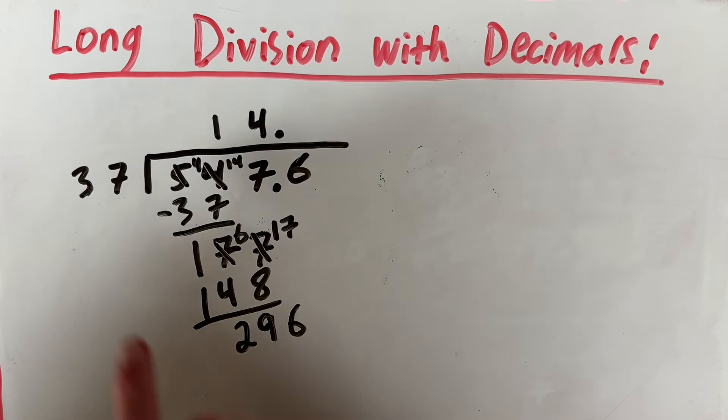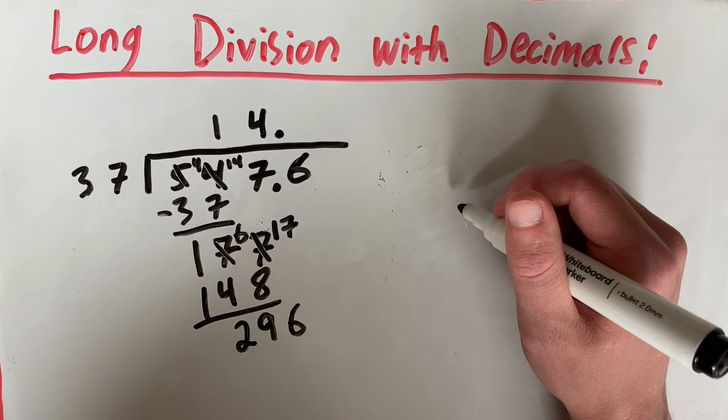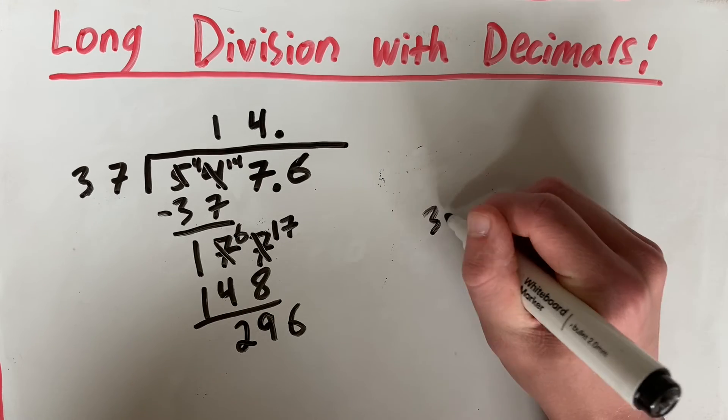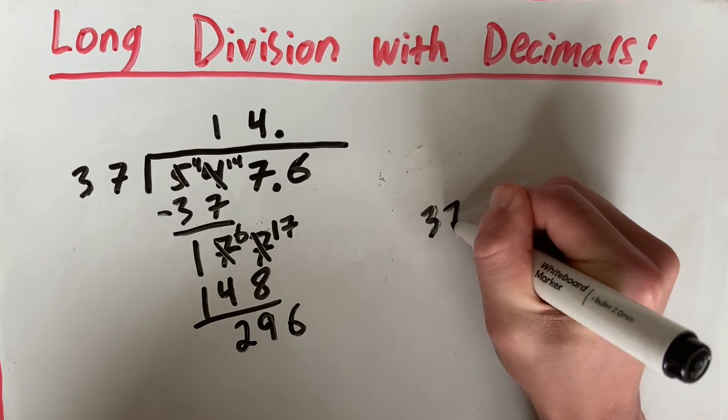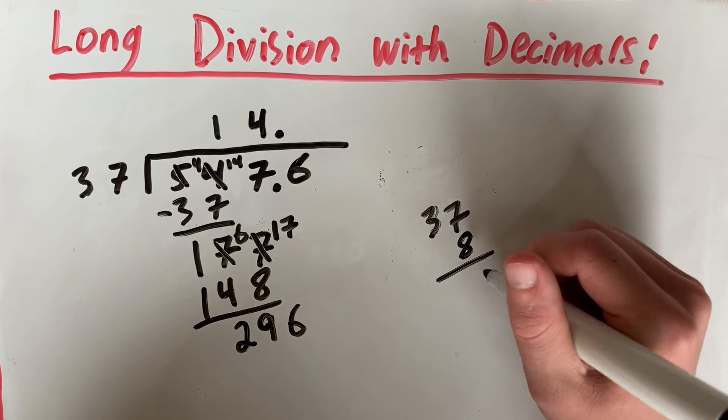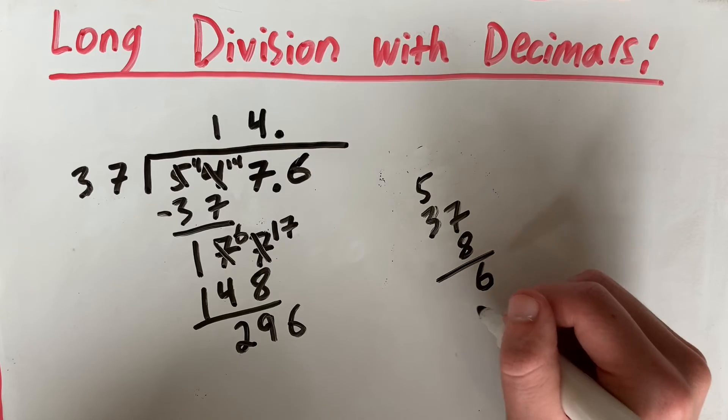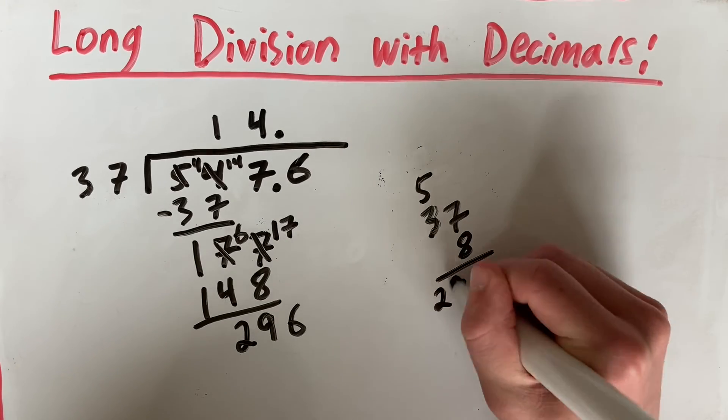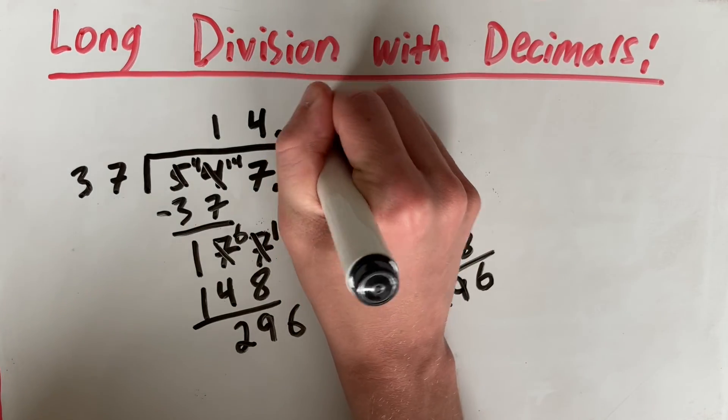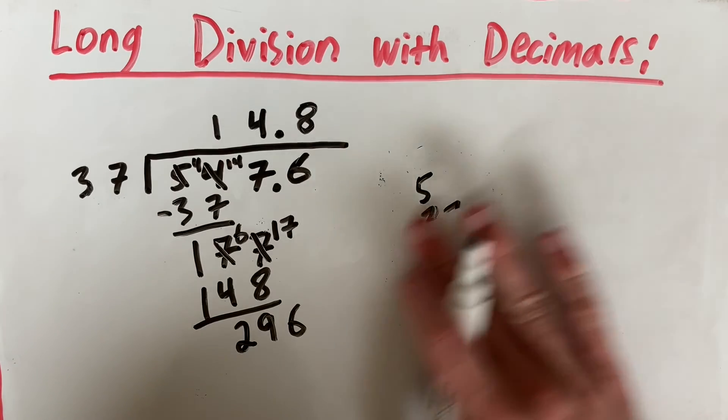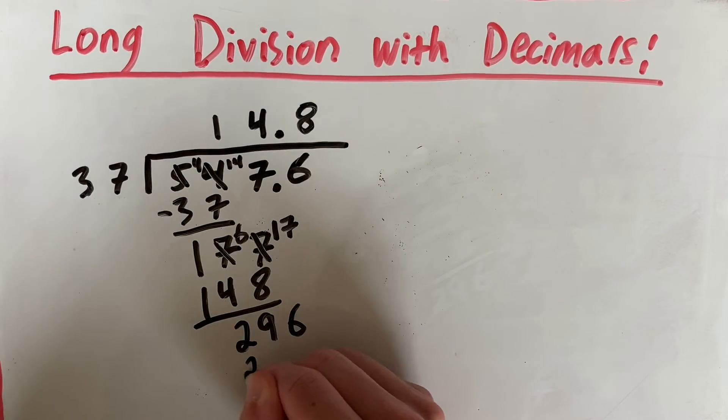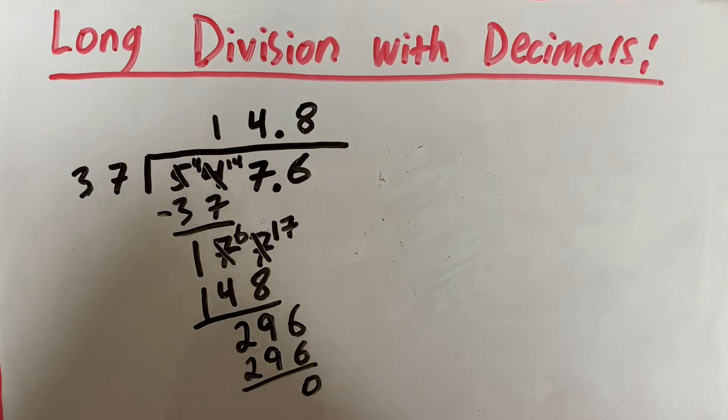How many times does 37 go into 296? Well, if we guess, I'd say it's about 8. So let's work it out to see. So if we do that by hand, 37 times 8, well that gives us 56. And then 8 times 3, 24 plus 5 is 29. So 296. And that fits perfectly. So 37 times 8 is 296.